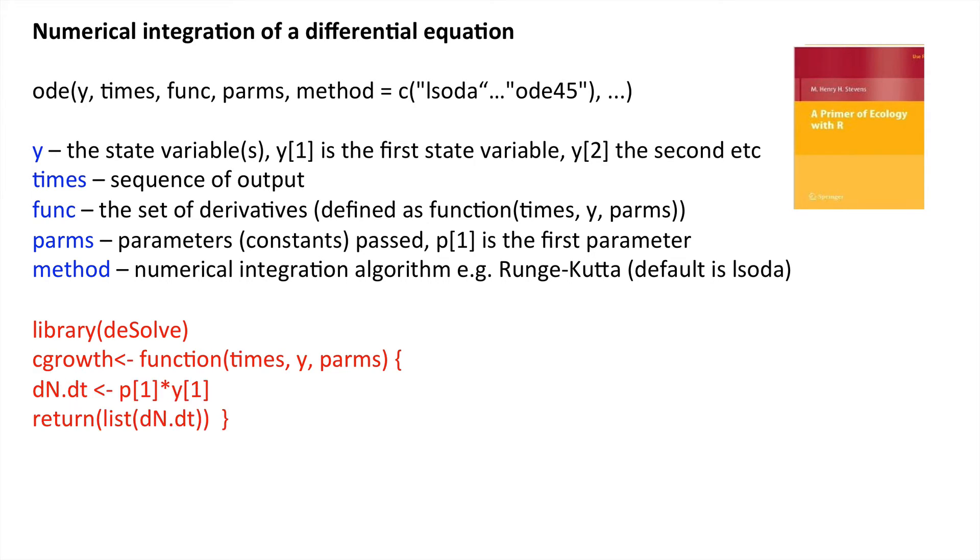Now, here is our function that we are going to define. We're calling it cgrowth for continuous growth. And that function has to be defined in a certain way.